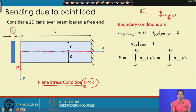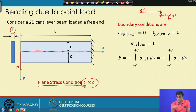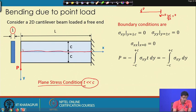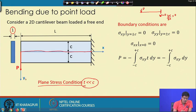The original boundary condition is that v = 0 and ∂v/∂x = 0 at the built-in end; slope and deflection are zero at the fixed end. These conditions are in terms of displacements, but we need stress-based boundary conditions.